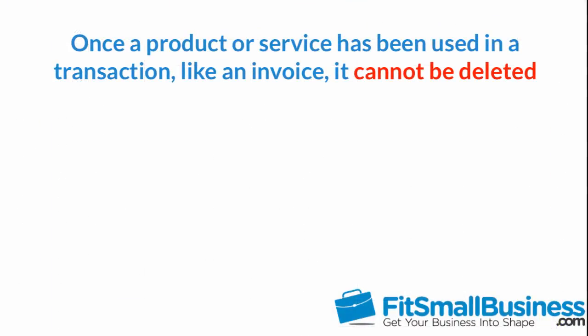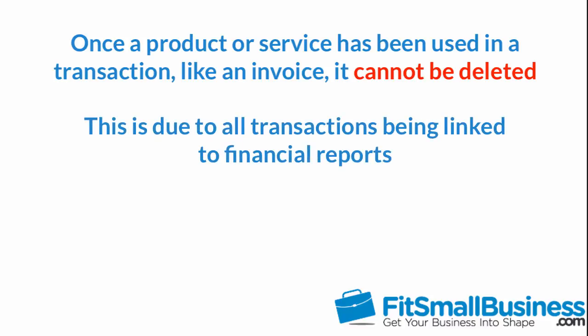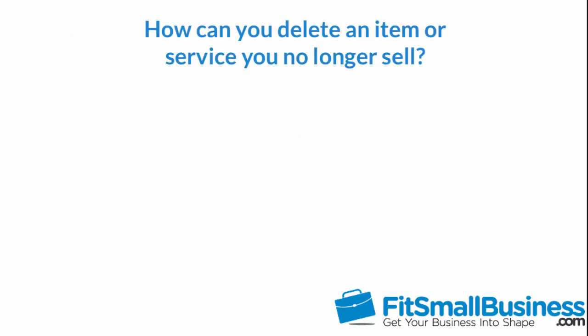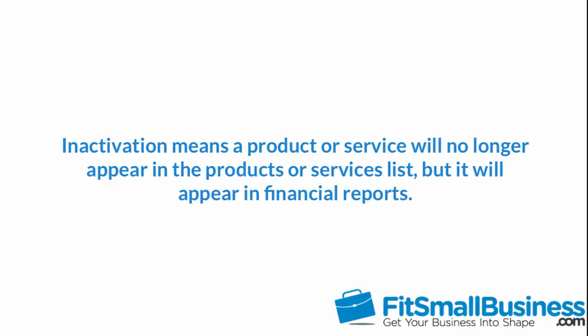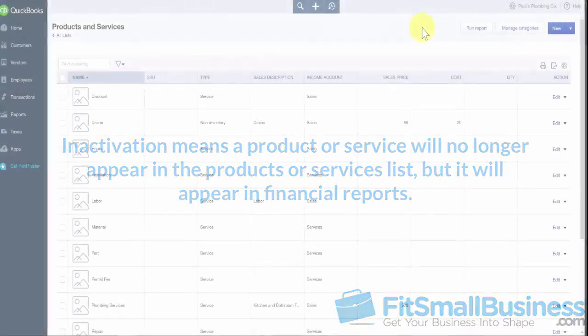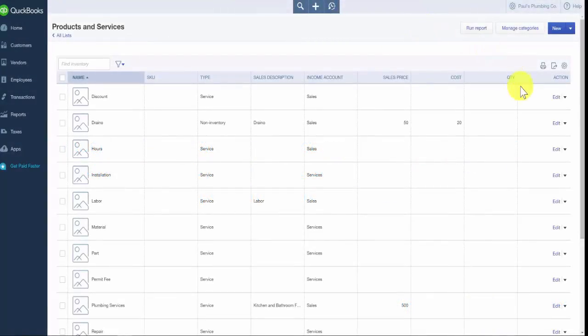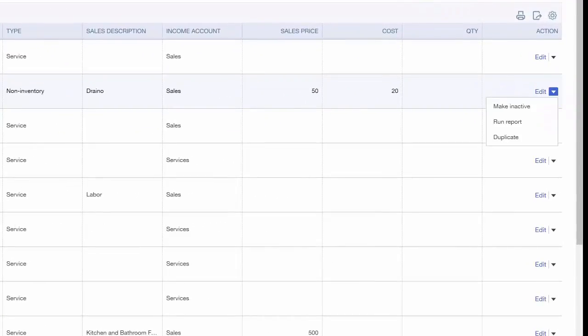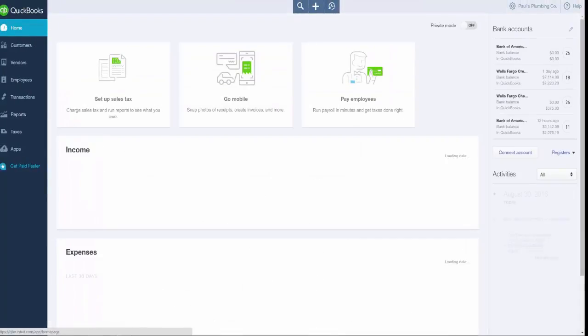You cannot delete a product or service from QuickBooks once you have used it in a transaction, such as creating an invoice for a customer. This is because all transactions are linked to the financial statements. However, if you no longer need an item on your products and services list, you can inactivate it. This means it will no longer appear on the products and services list, but it will still appear in financial reports if it was used in a transaction. To inactivate an item, click the drop-down arrow to the right of the edit link and select Make Inactive.